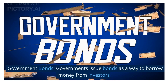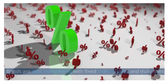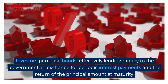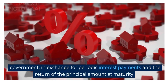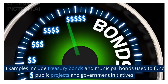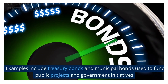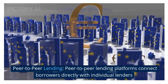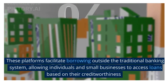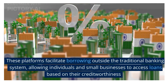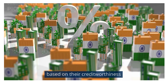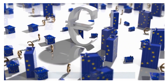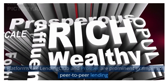Governments issue bonds as a way to borrow money from investors. Bonds are debt instruments with fixed interest rates and maturities. Investors purchase bonds, effectively lending money to the government, in exchange for periodic interest payments and the return of the principal amount at maturity. Examples include treasury bonds and municipal bonds used to fund public projects and government initiatives. Peer-to-peer lending platforms connect borrowers directly with individual lenders. These platforms facilitate borrowing outside the traditional banking system, allowing individuals and small businesses to access loans based on their creditworthiness. Borrowers benefit from potentially lower interest rates, while lenders earn interest on their investments. Platforms like LendingClub and Prosper are prominent examples of peer-to-peer lending.